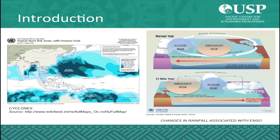As you have learned in previous sessions, Pacific Islands are threatened by climate change impacts. However, they are also facing natural hazards. Some of them, called hydro-meteorological hazards, are linked with weather and climate. They are cyclones, floods and droughts. They are the most common hazards and are causing the most damages in the Pacific Islands.